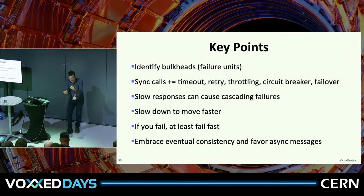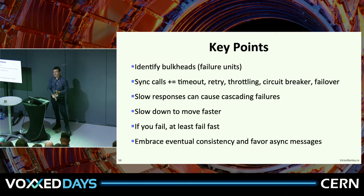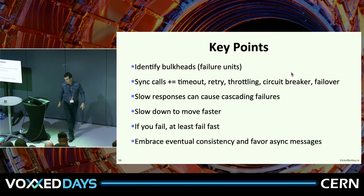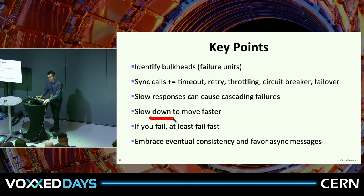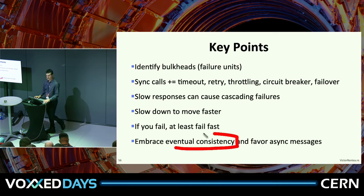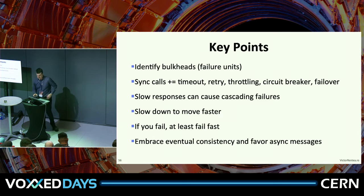Key points to wrap up: ask yourselves which microservices should still work if others fail — the boundaries of the bulkheads. Whenever you do a synchronous call or block threads, ask what timeout to set, should you retry, should you throttle, should you add a circuit breaker, and how can you fail over if it permanently fails? Slow responses can harm your clients of clients of clients — they ripple back into the whole call chain. If you take less load, you can move faster. If you fail, at least fail fast. Don't be afraid of eventual consistency — it might be better for the business, cheaper to tolerate a bit of inconsistency for the sake of availability.